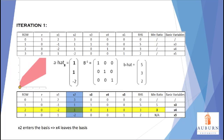Let's fill in the rest of the tableau with the technological coefficients from the constraints, and fill in the right-hand side with the right-hand side values of the constraints. Let's put zeros in the Z column for rows 1, 2, and 3. Looking at the X3, X4, and X5 columns, we can see that each column has a pivot — a 1 in one row and zeros in the other rows. These three columns correlate to the basic variables, and the inverse B matrix is present in the tableau for rows 1, 2, and 3 in columns X3, X4, and X5.